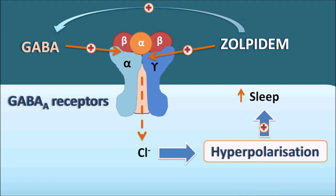In this way, Zolpidem acts as a hypnotic by binding to the same site where benzodiazepines also bind. Just like benzodiazepines, Zolpidem acts as a positive allosteric modulator for GABA. However, because of its selective activity on benzodiazepine-1 receptors, Zolpidem mainly produces the hypnotic effect.